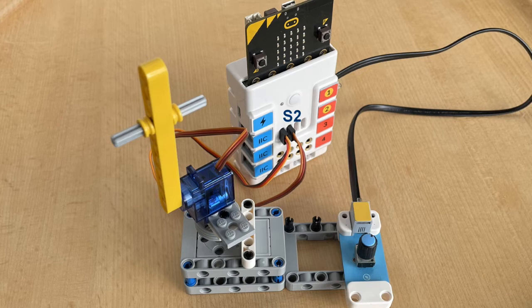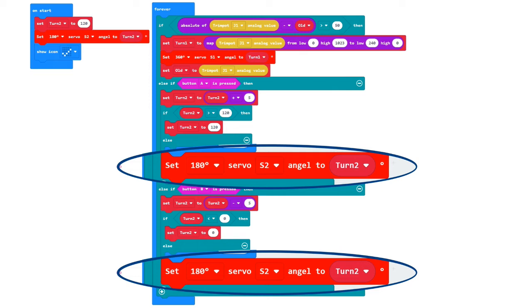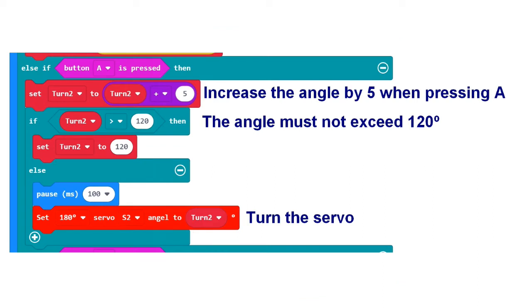The program here can control the two motors but can't remember the movements. Note that the new servo must be set to 180 degrees and that it is connected to S2 again with a yellow wire upwards. The angle is increased by 5 degrees when you press button A. When you press button B, it becomes 5 degrees smaller.